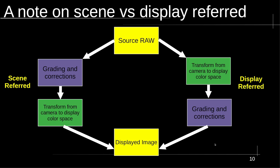With scene-referred, if you want to tweak for a wider gamut or bit depth display, you just adjust your filmic transform instead of having to redo all your color gradings. Scene-referred is more portable and the way forward. A few years ago I said both were equally valid — I no longer think that. Scene-referred tools are more mature and feature-complete now. I do everything in the scene-referred space and you should too.